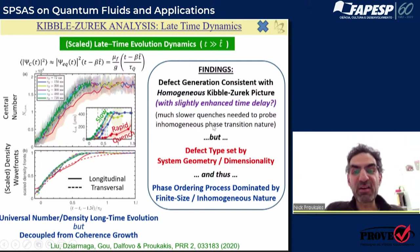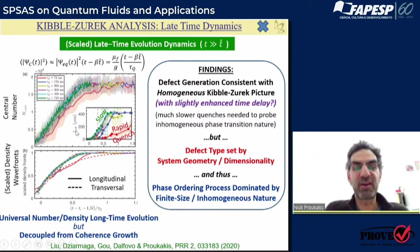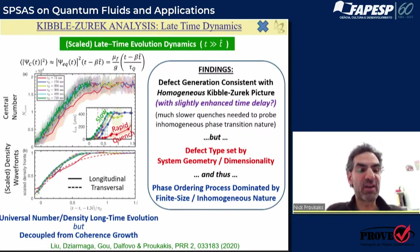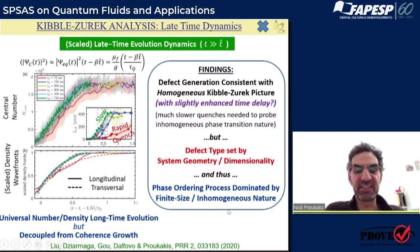One important thing to note: even though the system is inhomogeneous, it is homogeneous-like in behavior. So we can use the cartoon homogeneous Kibble-Zurek picture and it still describes things very well. We have done some work to understand what types of quenches would be needed to probe inhomogeneity — it's actually quite hard. In this experiment, they would have needed to run for at least 10 seconds rather than one second, or have much tighter confining potentials. But the type of defect is set by the geometry and the dimensionality. Phase ordering is not universal — it's dominated by the type of trap that defines the system.